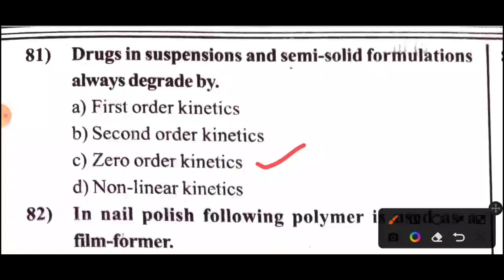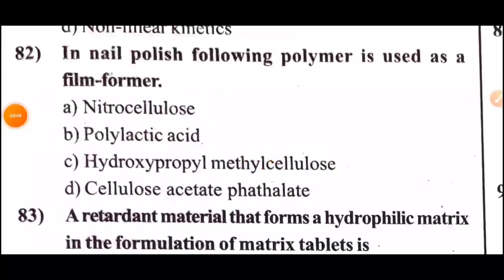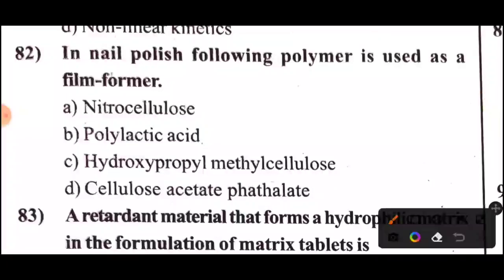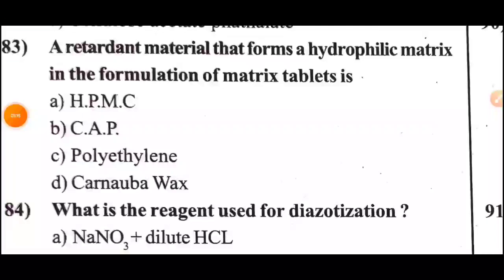Question 82: In nail polish, which following polymer is used as a film former? Option A: Nitrocellulose.